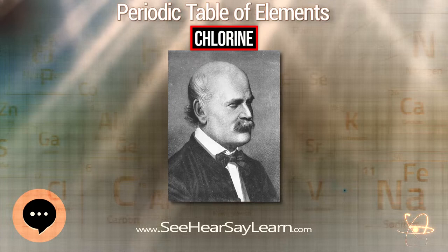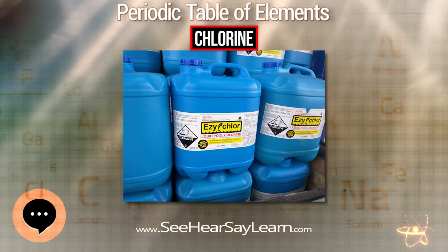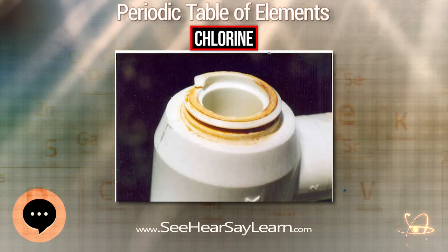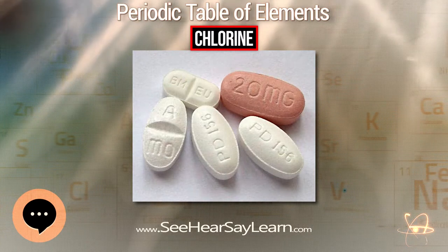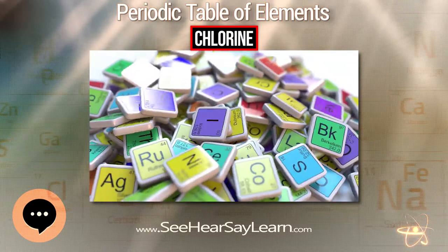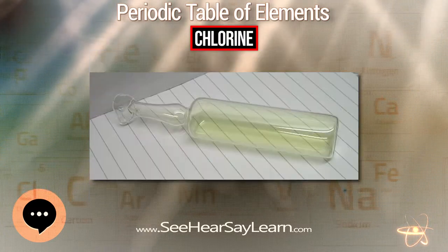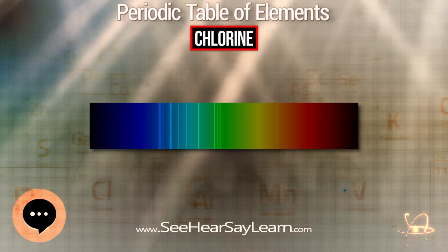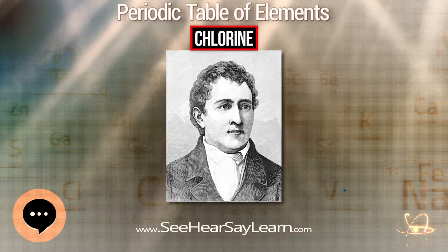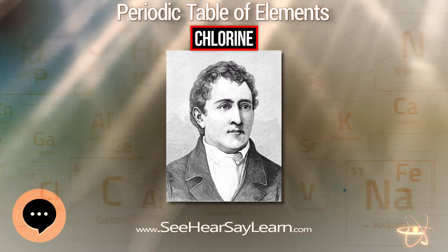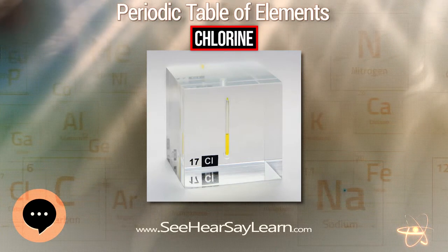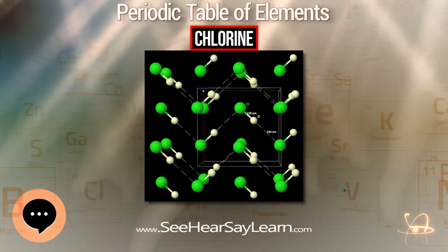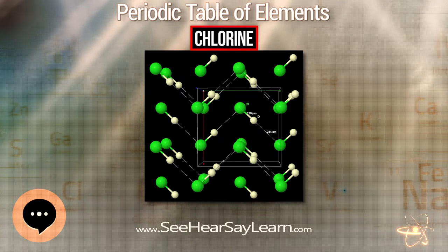Chlorides can be made by reaction of an element or its oxide, hydroxide, or carbonate with hydrochloric acid, then dehydrated by mildly high temperatures combined with either low pressure or anhydrous hydrogen chloride gas. These methods work best when the chloride product is stable to hydrolysis. Otherwise, possibilities include high-temperature oxidative chlorination of the element with chlorine or hydrogen chloride, or chlorination of a metal oxide by chlorine, a volatile metal chloride, carbon tetrachloride, or an organic chloride. For instance, zirconium dioxide reacts with chlorine at standard conditions to produce zirconium tetrachloride, and uranium trioxide reacts with hexachloropropene when heated under reflux to give uranium tetrachloride.